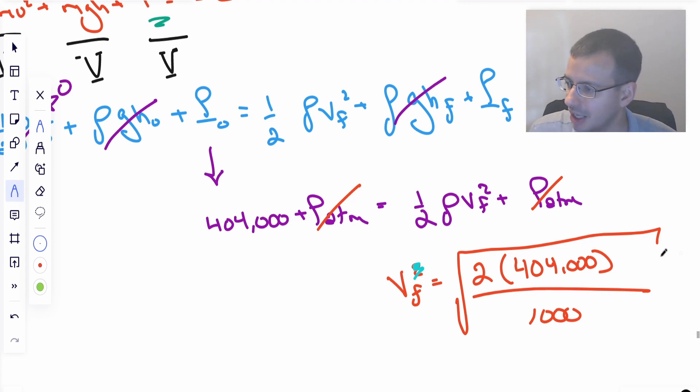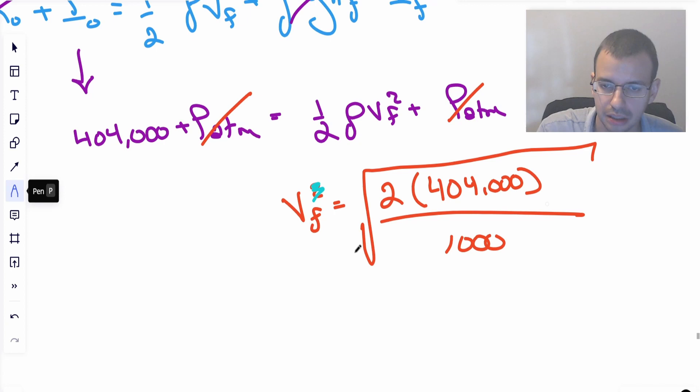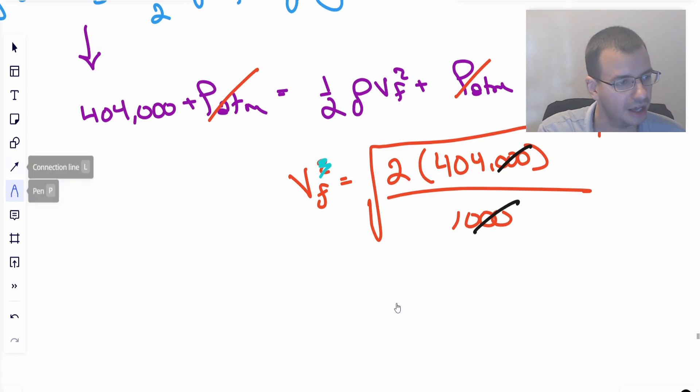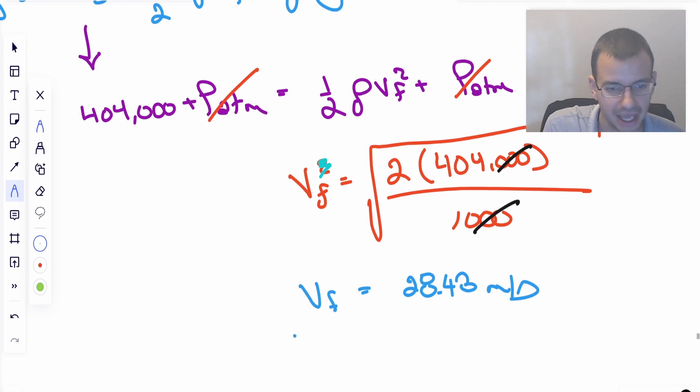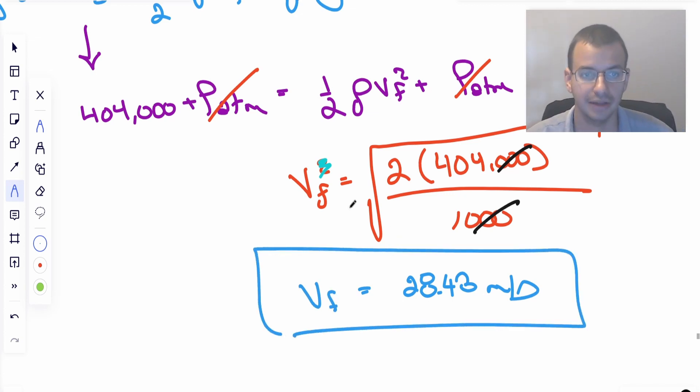This right there, calculator. Can I do that in my head? Maybe. I'm not going to. So the square root of 2 times 404, that gives us a value of about 28.43 meters per second. So that is going to be the speed of the water leaving the pipe.